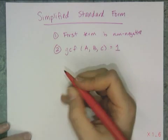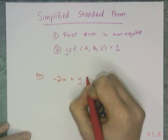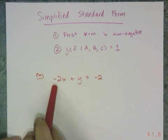And these are really easy to fix, so let's just do a couple of quick examples of ones that are not simplified, and let's simplify them. So this one's not simplified because that first term is negative.